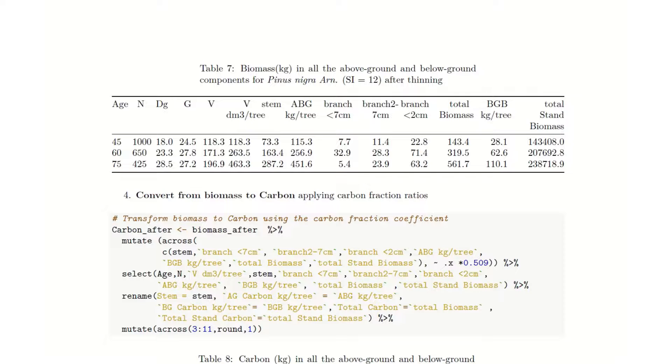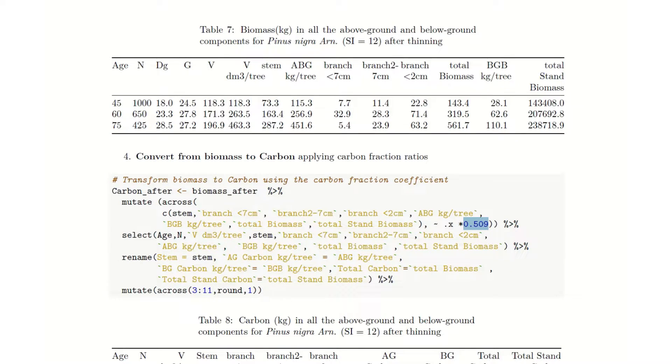Finally, once we have calculated all the biomass, we just have to apply the carbon conversion value from biomass to carbon. The carbon coefficient normally relates to 50% of the content in the biomass and this is different for each type of species. In this case, for Pinus Nigra, the carbon fraction is equal to 51% of the carbon in the biomass. So, in this snippet of code, we just mutate across all the variables and apply on each column this simple equation, we just multiply it by 0.51.